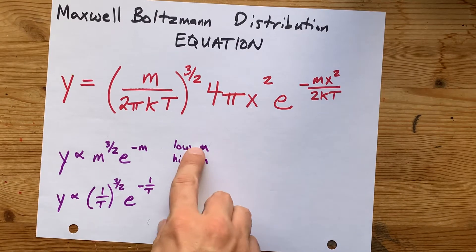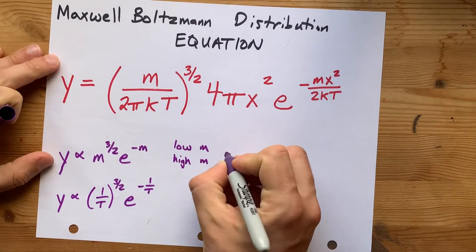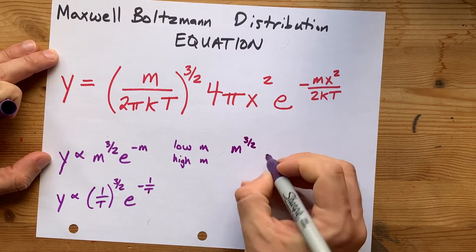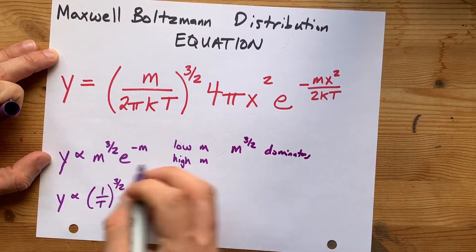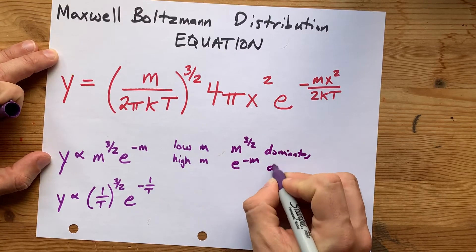So at a lower M, the term that's dominating this function is M to the 3 halves. And at the higher M, the term that's dominating is E to the negative M. It's the exponential decay.